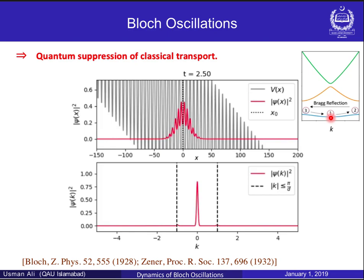Here is our initial Gaussian distribution placed in the ground band of the tilted periodic potential. The absolute square of the resulting wave packets is shown in both spatial and quasi-momentum representations, where the dotted line marks the initial center of mass location and the dashed lines depict the first Brillouin zone constraints.